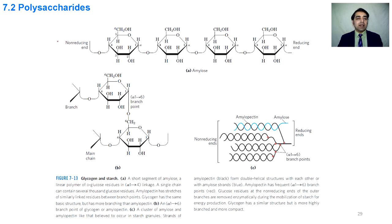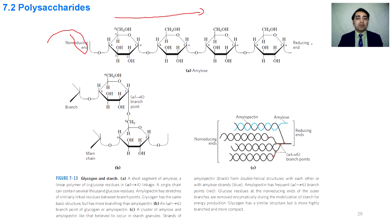The glucose monomers are being added at the non-reducing side of amylose, and the last sugar containing a free anomeric carbon is the reducing end of amylose. In the same way, amylopectin also has a reducing end.